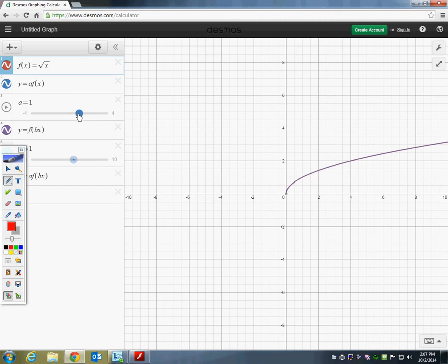So first of all, what happens if I make it a negative one? So I'll slide over to negative one. Yeah, the same result, isn't it? Just like that parabola got reflected over the x-axis, same thing here. This square root of x now got reflected over the x-axis.